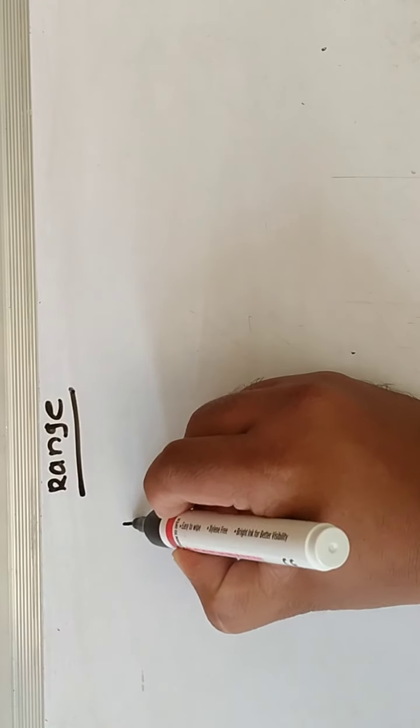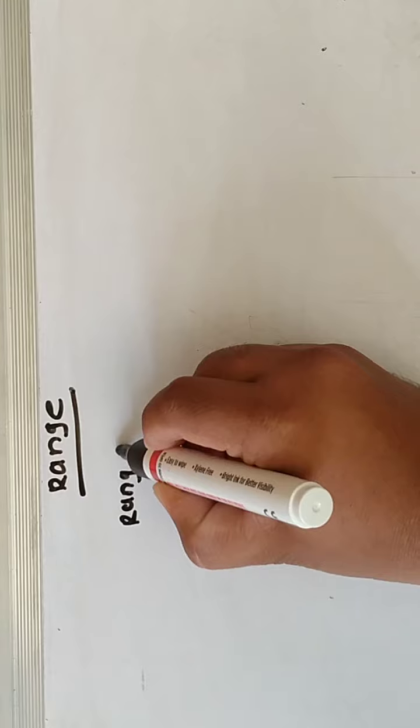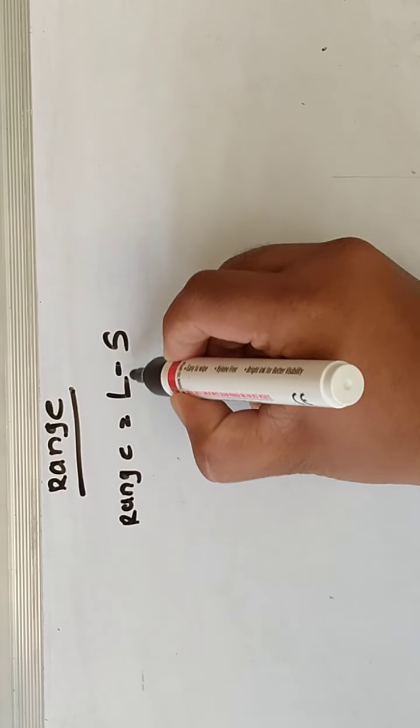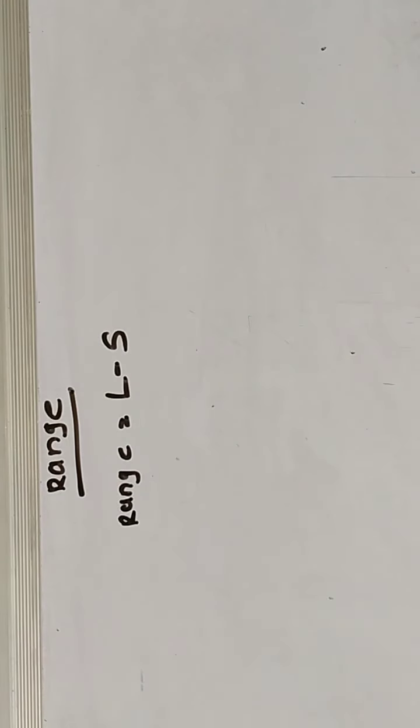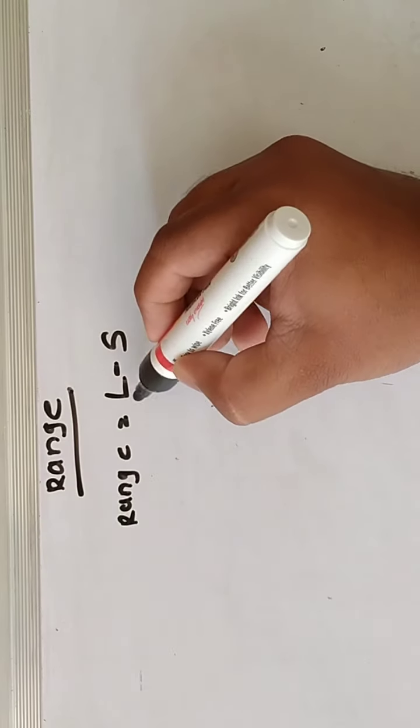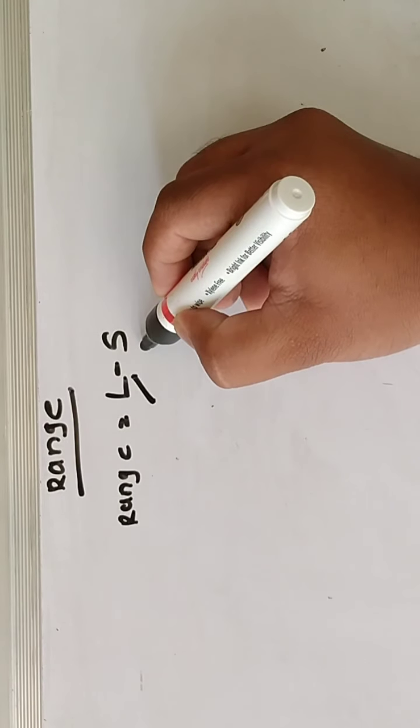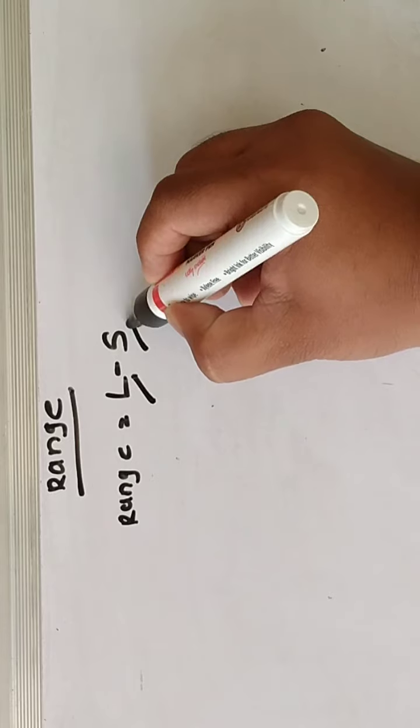Friends, the range is the simplest possible measure of dispersion and is defined as the difference between the largest and smallest value of a variable. In symbols, range equals L minus S, where L means largest value and S denotes smallest value.